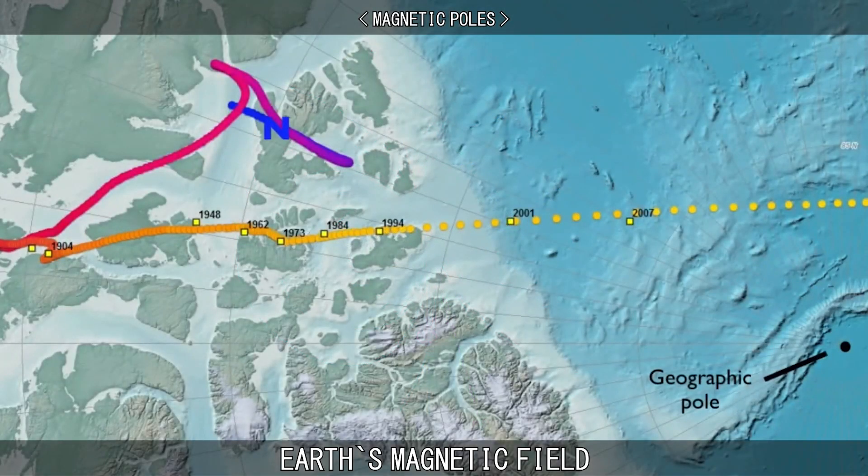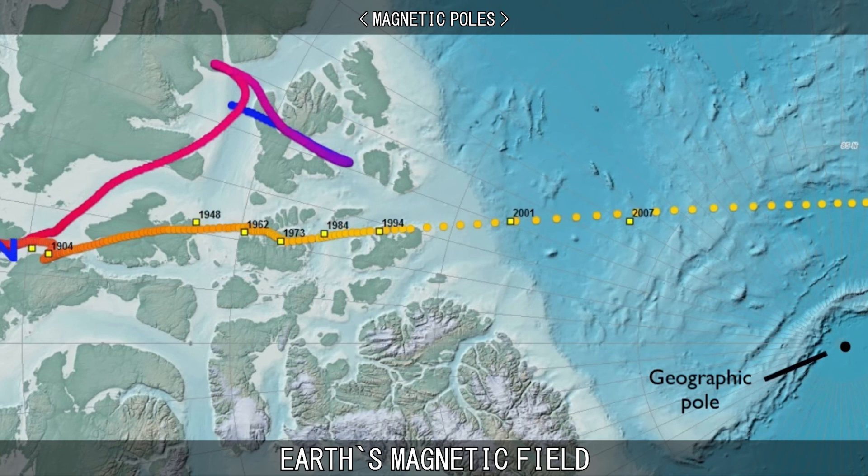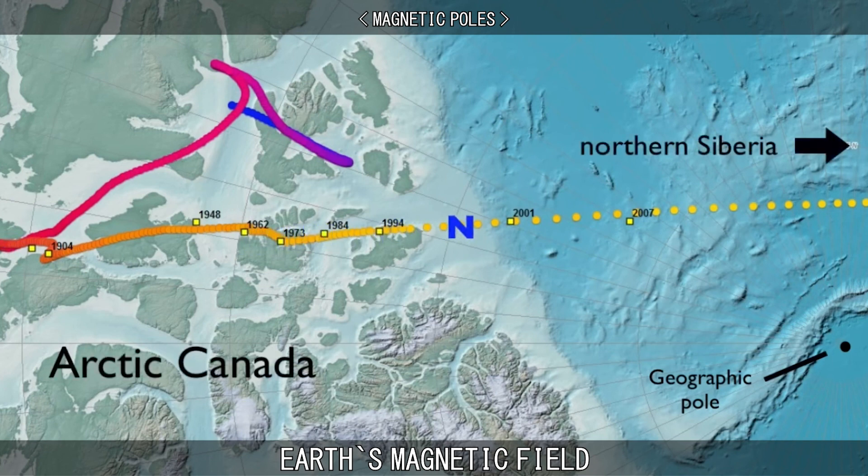Both magnetic poles differ from their geographic counterparts, meaning that the north magnetic pole and the geographic north pole are not in the exact same spot. In fact, the magnetic poles move over time, while the geographic poles stay in a fixed position.